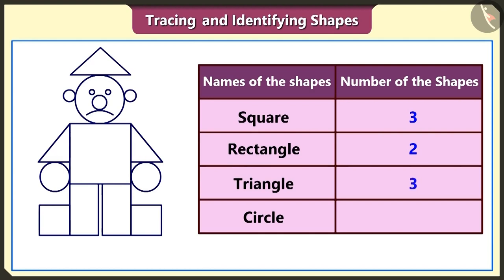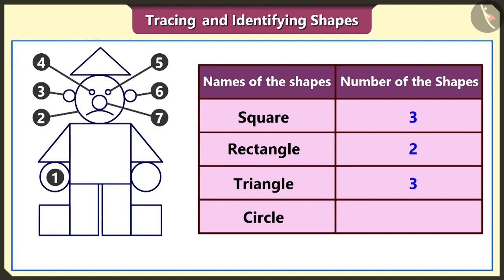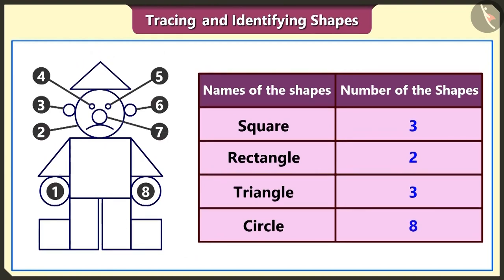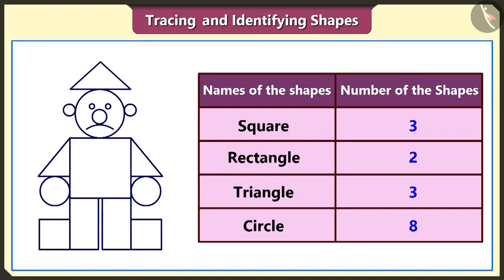There are one, two and three triangles in this doll. Let's now count the number of circles used. Yes, there are one, two, three, four, five, six, seven and eight circles used here. We got to know that there are three squares, two rectangles, three triangles and eight circles used in the making of the doll.